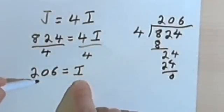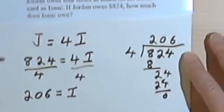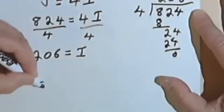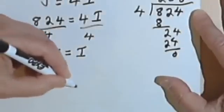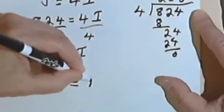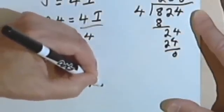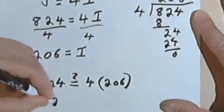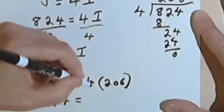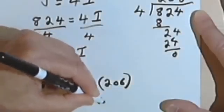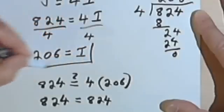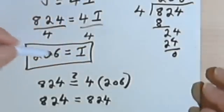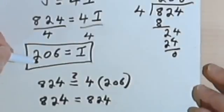We can check that by working backwards. If Jordan owes 4 times as much as Isaac, then we want to see if 824 is the same as 4 times the amount that Isaac owes, which is 206. Multiplying that out, we get 824. So this answer checks, and you'll write Isaac owes $206.